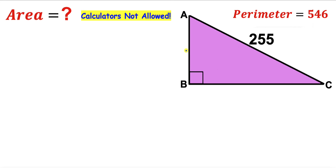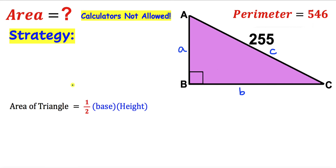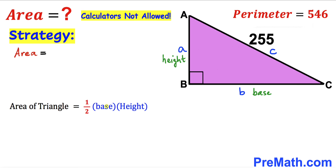Let me label the side lengths of this right triangle. I'm going to call this side lowercase a, this side lowercase b, and this hypotenuse — the longest leg — side c. Since we are interested in calculating the area, we recall: area equals one-half times base times height. In our case, the base is b and the height is a, so the area equals a times b divided by 2. Let's call this equation number 1.